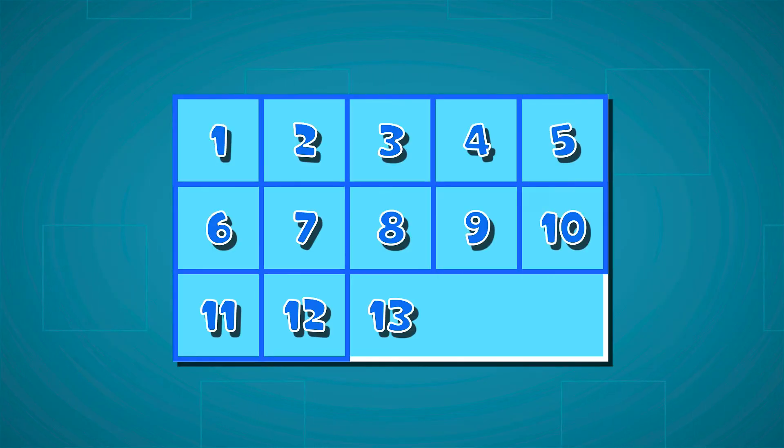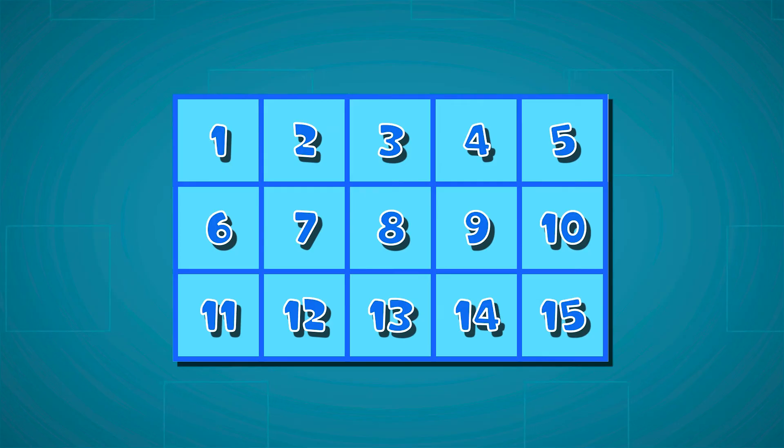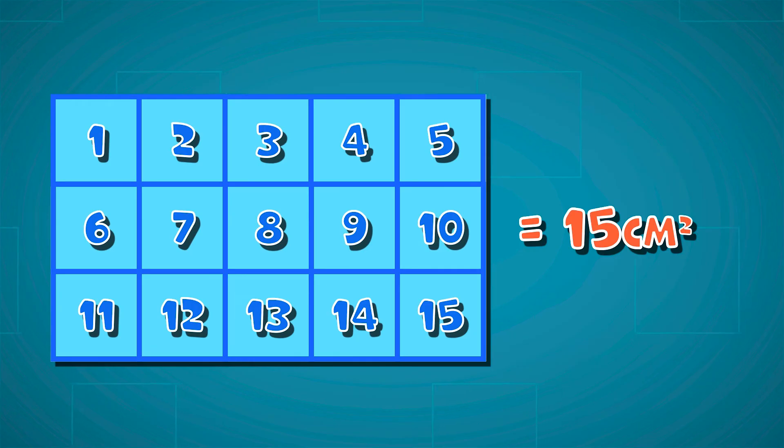For example, let's say there were 15 unit squares inside your 2D shape. This means that the area of your 2D shape is 15 centimeters squared.